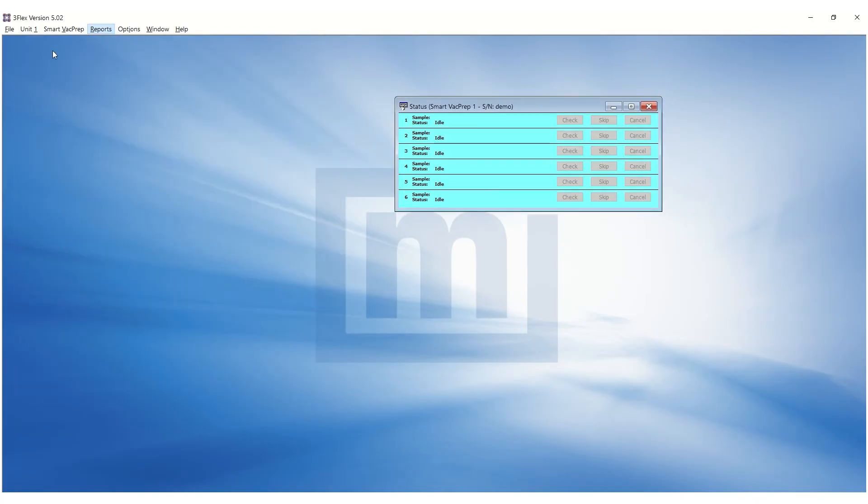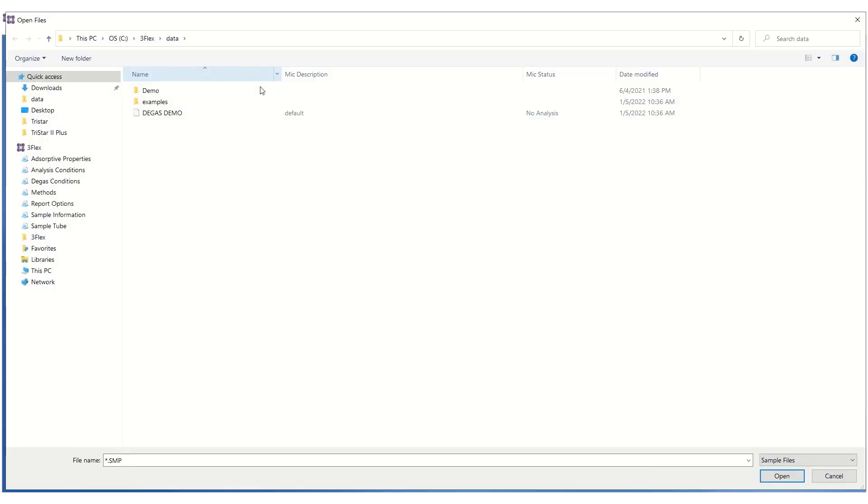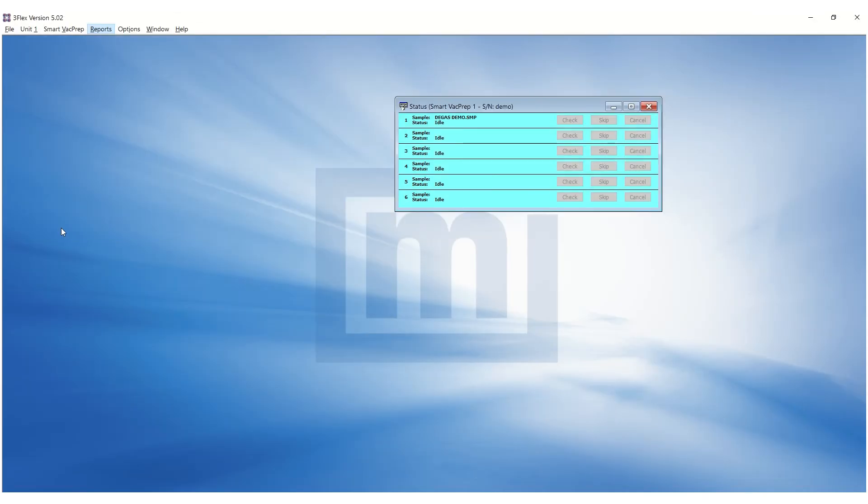To start degas, go to the SmartVacPrep menu, prep, and click on start degas. Click browse to select the SMP file for the appropriate degas port and click start.